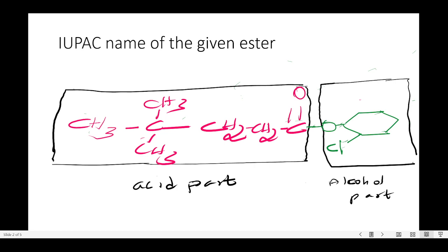We know that any ester consists of a part that comes from the acid and part that comes from the alcohol, because esters are made by the acid-catalyzed reaction of carboxylic acid and alcohol. Having established the acid part and alcohol part, let us first look at the alcohol part.